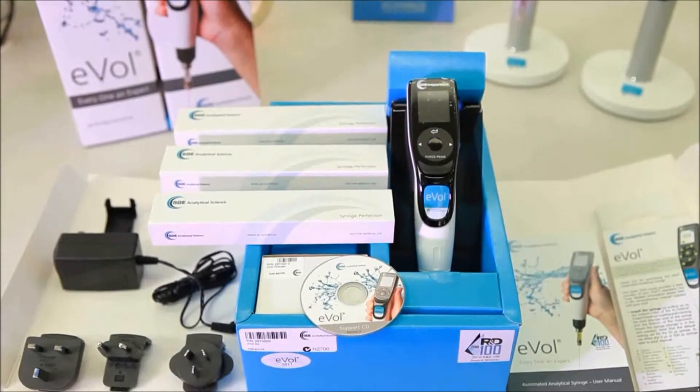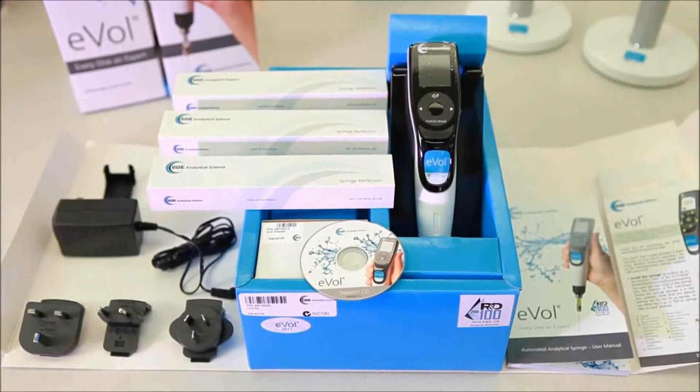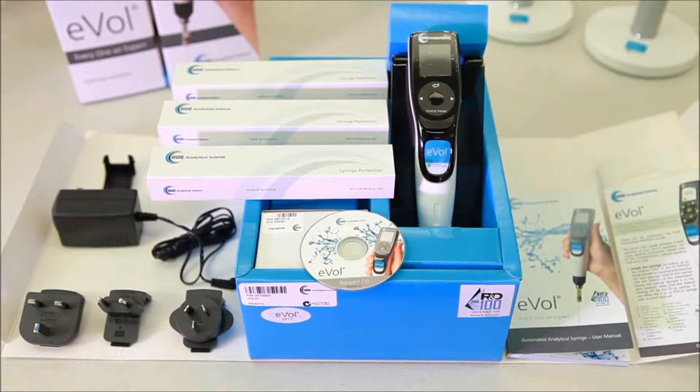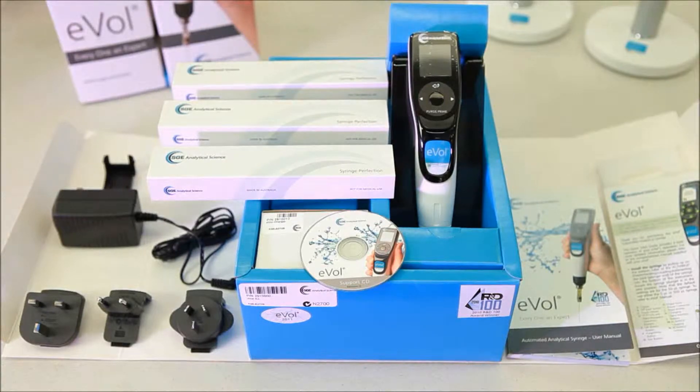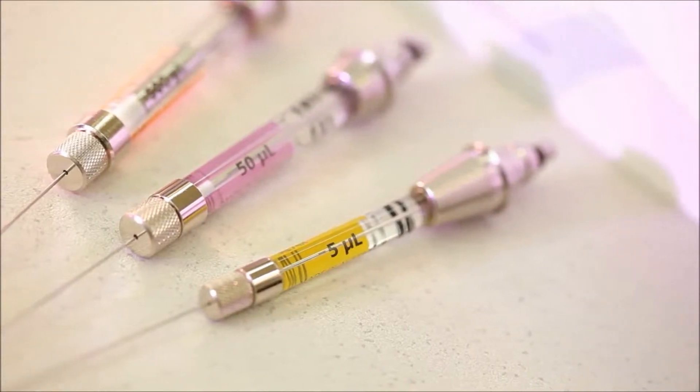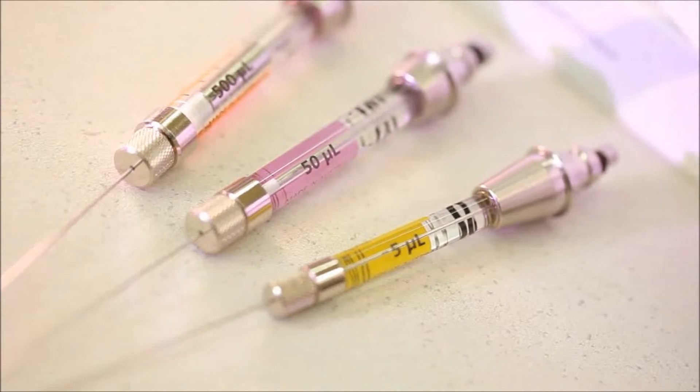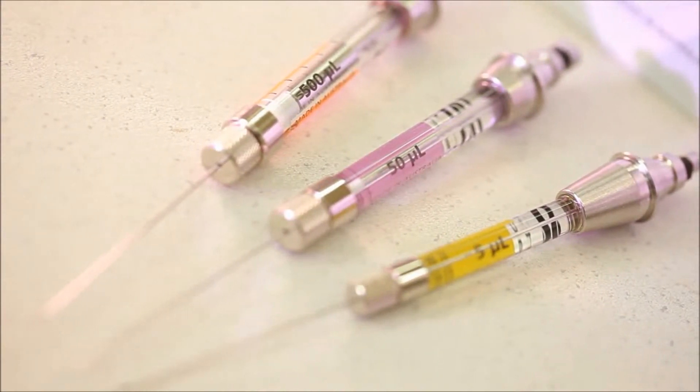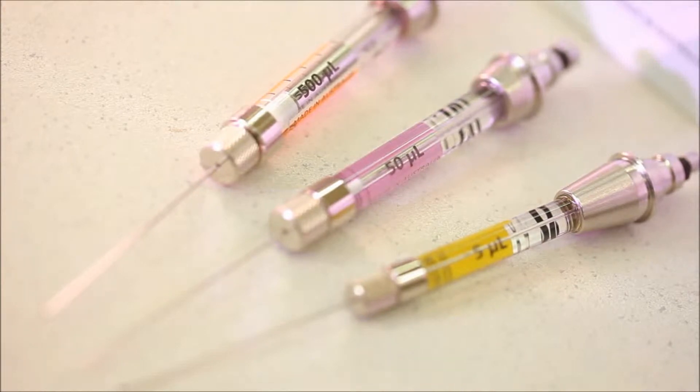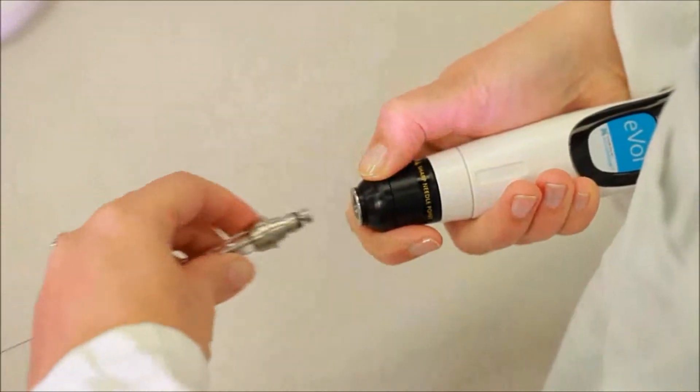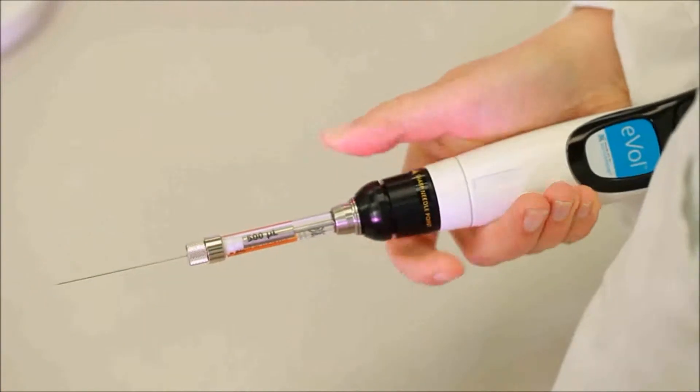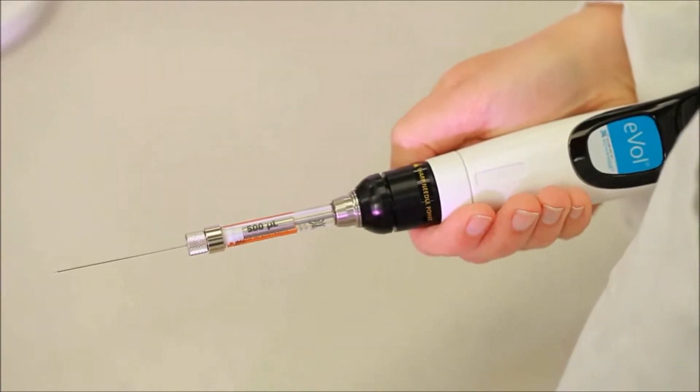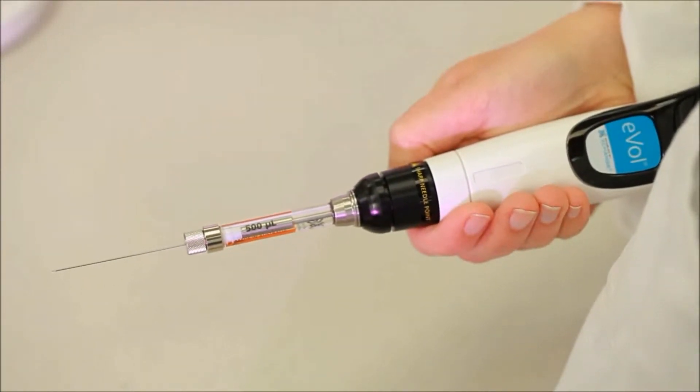The EVOL electronic syringe starter kit contains everything you need to get started, including one EVOL automated analytical syringe handle, one 5 µL, one 50 µL, and one 500 µL EVOL exchange syringe, all fitted with 50 mm needles. The syringes can be easily and quickly changed, allowing them to be dedicated to individual liquids or methods, or to avoid cross-contamination.